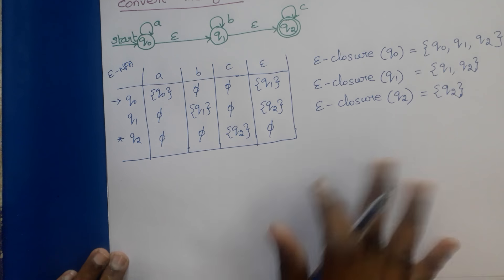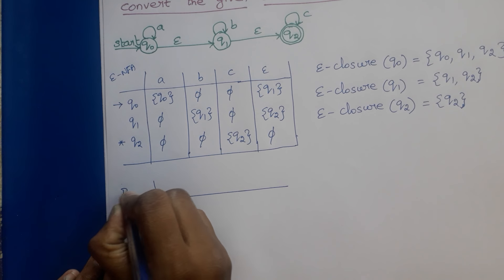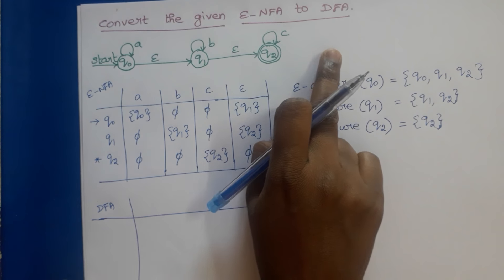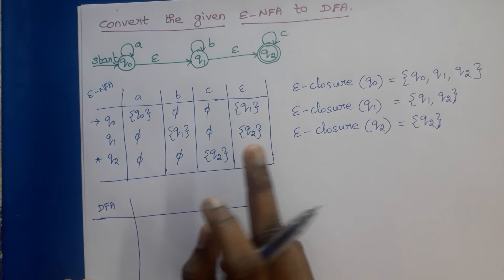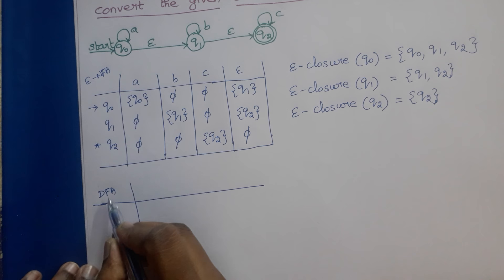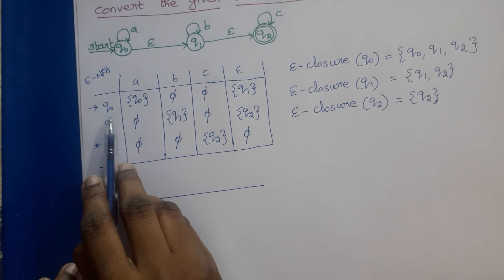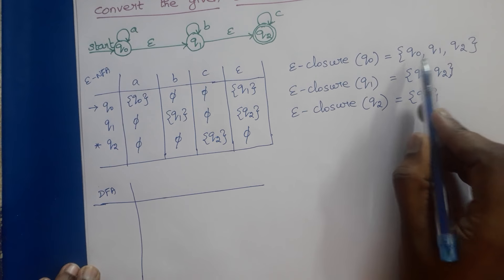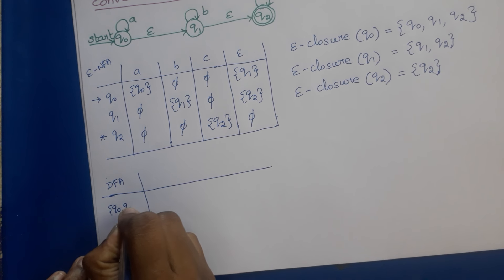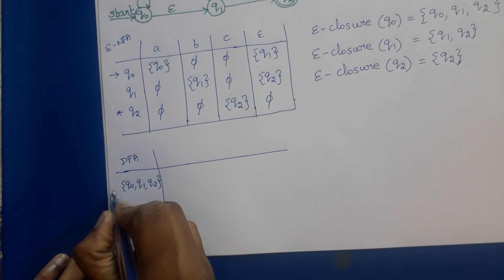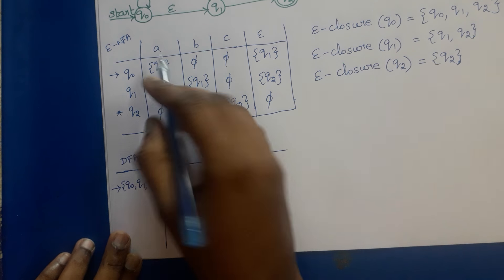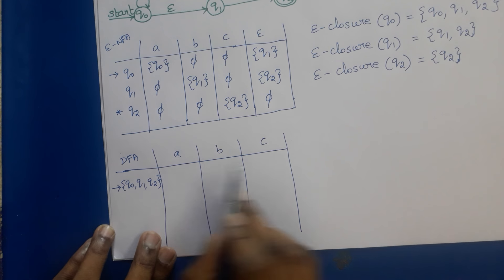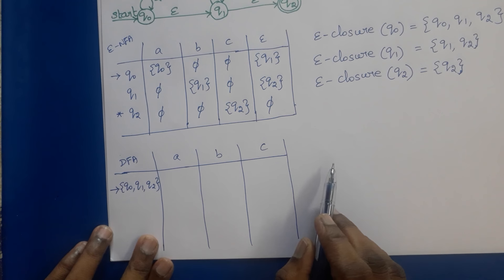Next we have to find the DFA table. The epsilon NFA to DFA conversion is similar to NFA to DFA conversion, which we discussed in the previous lecture. The starting state of the DFA is the epsilon closure of Q0, which is {Q0, Q1, Q2}. So {Q0, Q1, Q2} is the start state for DFA. The input symbols are A, B, C. We do not write epsilon because DFA does not have epsilon transitions.